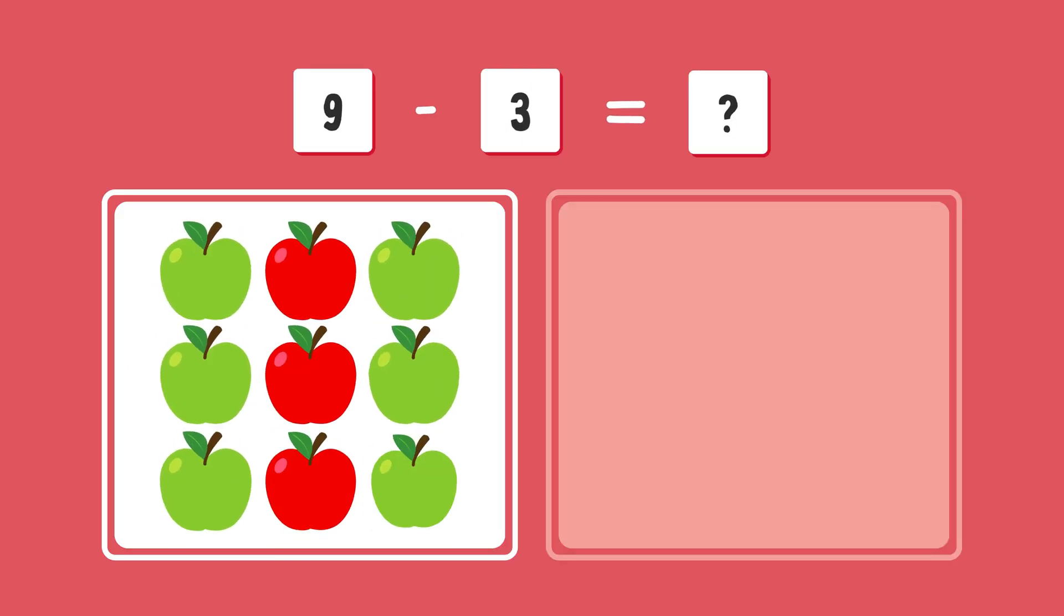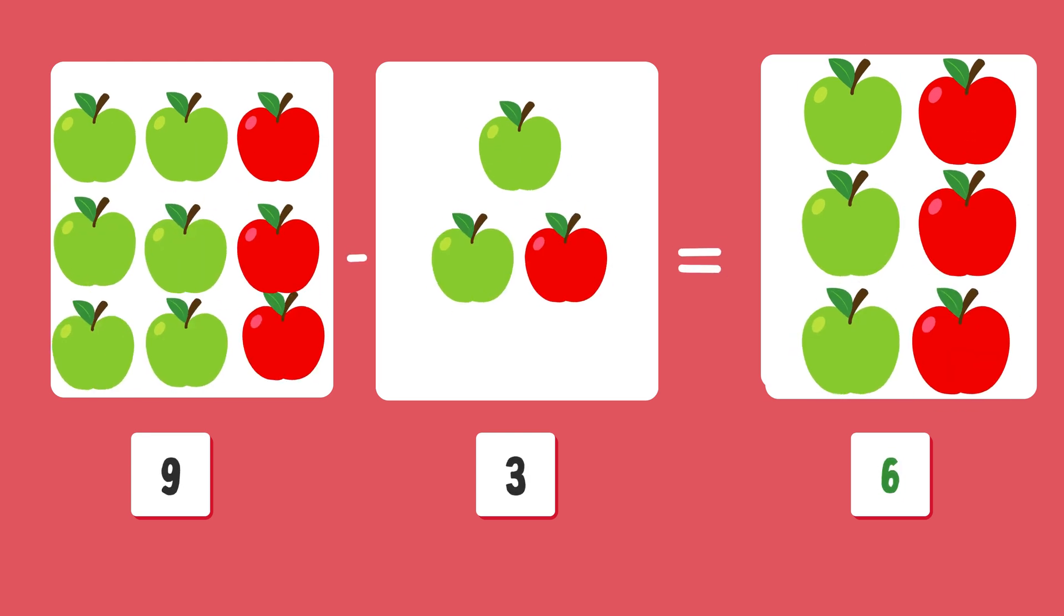What is nine minus three? Let's find out. Correct answer is six.